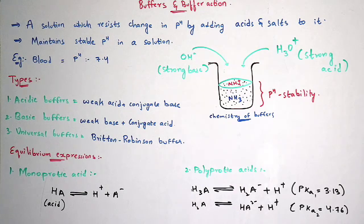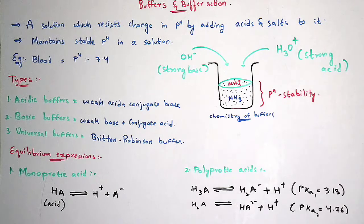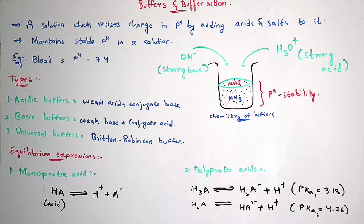For example, in the case of human beings and not only humans but all living organisms, there is blood, and that blood consists of bicarbonates. Due to the presence of bicarbonates the pH of the blood is maintained at 7.4. If this pH gets increased or decreased then the human being or other living organisms cannot survive. So the stability of pH is maintained with the help of bicarbonates, which are the salts mainly present in the blood. That is one live example in the case of blood.